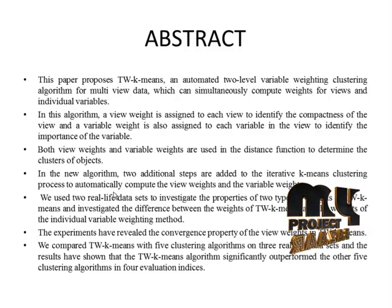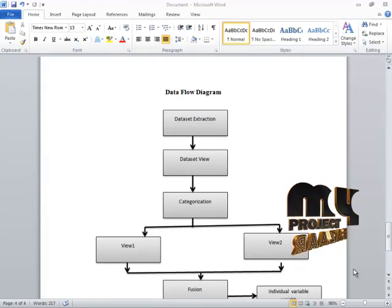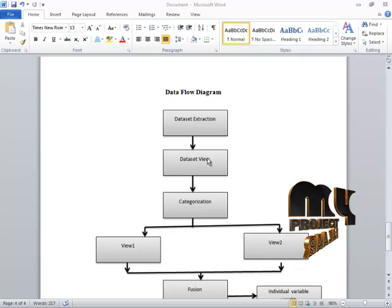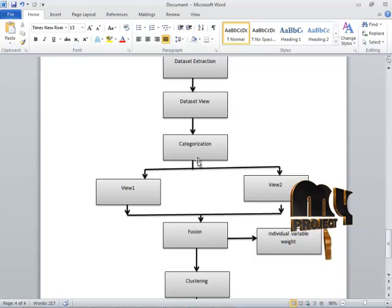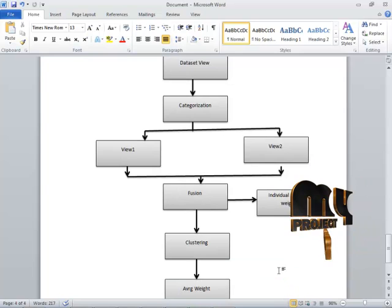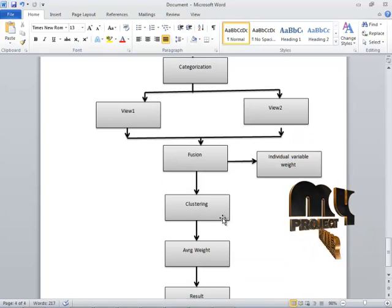Let's see the data flow diagram of our project. We use an image segmentation dataset. After extraction and the pre-processing stage, the dataset information is viewed by the end user through different views. We categorize view one and view two, segregated as per the datasets. After segregating, we fuse the dataset techniques and the individual weight of those datasets is found.